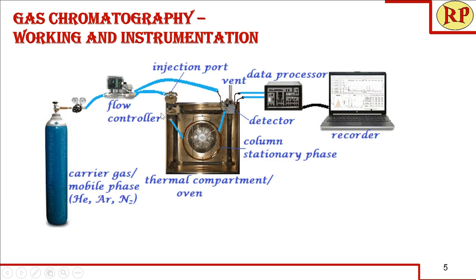The carrier gas acts as the mobile phase — normally an inert gas such as helium, argon, or nitrogen — and its flow is controlled using a pressure gauge and flow controller at a specified flow rate. The thermal compartment houses the column, which is the stationary phase. There is an injection port where we inject the sample using a micro-syringe; the sample enters the column and the carrier gas pushes or carries the sample throughout the column, where separation takes place.